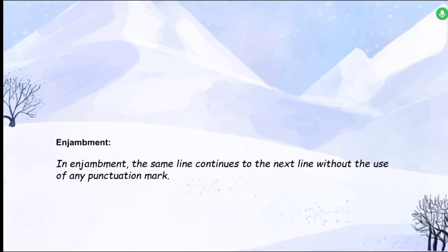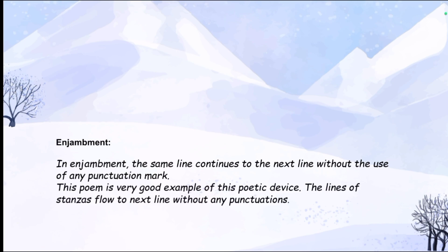The next figure of speech is enjambment, where the same line continues to the next line without the use of any punctuation mark. This poem is a very good example of this poetic device, as the lines of the stanzas flow to the next line without any punctuation.